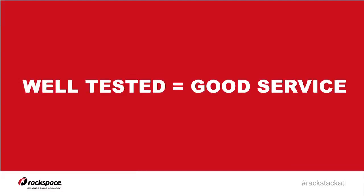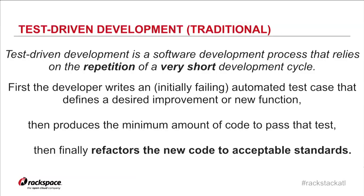Test driven development is traditionally defined by what's called red-green-refactor. You write something, it fails, it doesn't work; you write code for it at a very minimal level to get it to work — a bit hacky but it works — then you refactor the code to make it clean. That is traditional TDD.